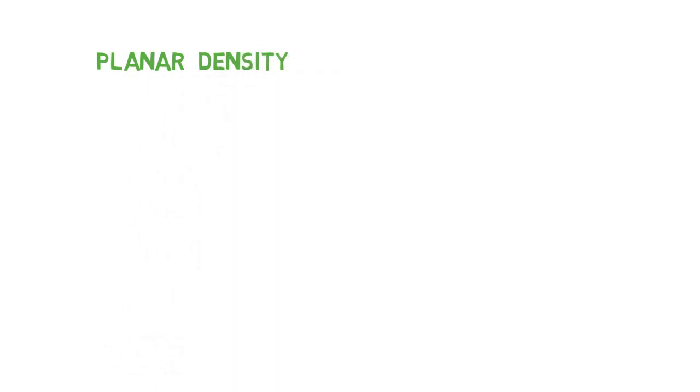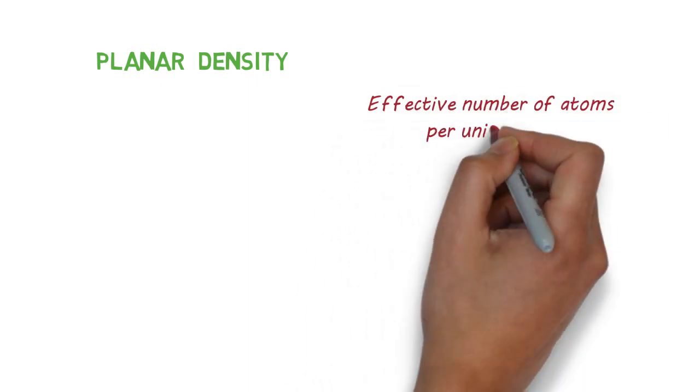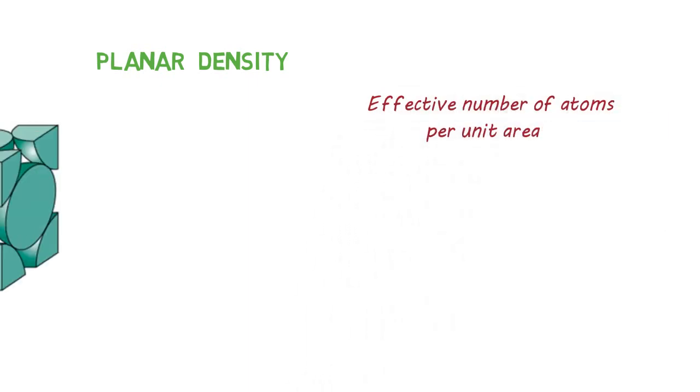There is an important term in crystallography known as planar density. Planar density is defined as the effective number of atoms per unit area.